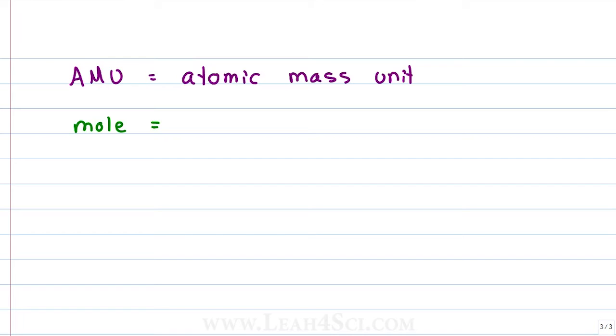A mole is a very specific number representing a large amount of something like atoms or molecules. Just like a pair represents 2 and a dozen represents 12, a mole—Avogadro's number—represents 6.02 × 10^23, or on the MCAT, simply rounded to 6 × 10^23. Now we can start our calculations.